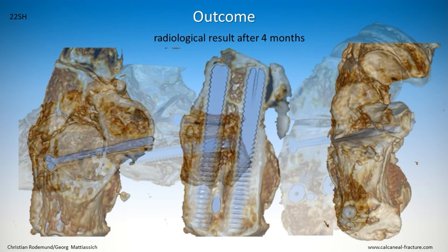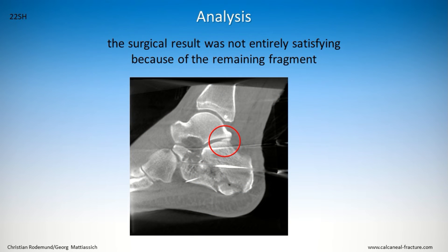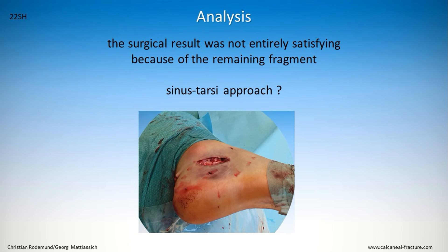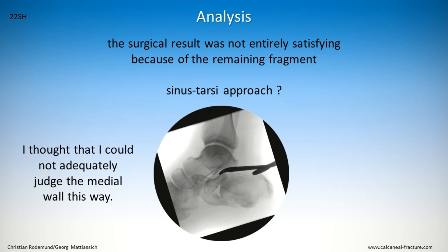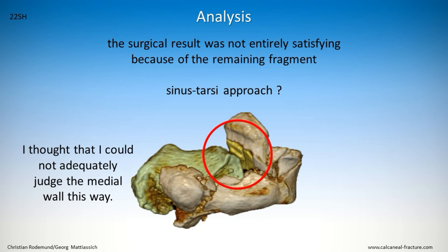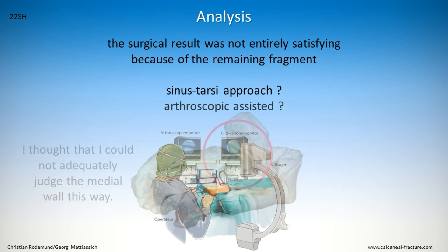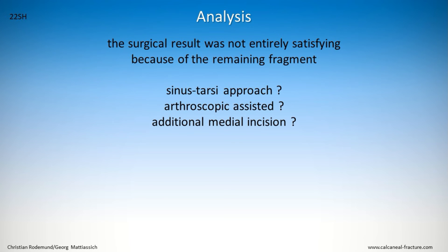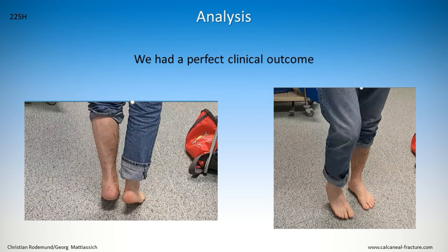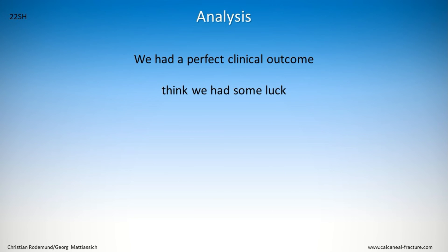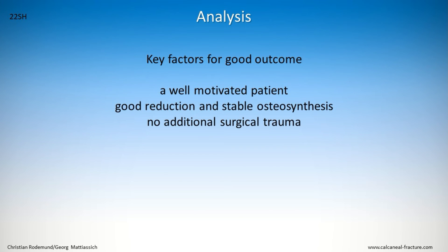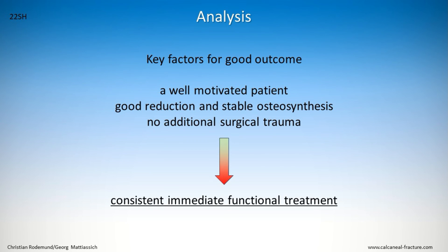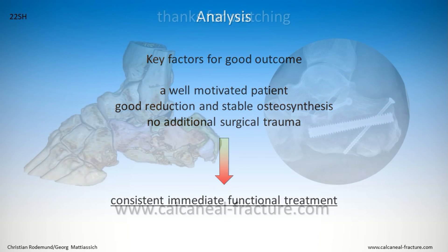When analyzing the case, some points need to be discussed. The surgical result was not entirely satisfying because of the remaining fragment. I did not use a sinus tarsi approach because I was uncertain whether I could adequately judge and reduce the medial wall in this way. But in hindsight it might have been useful. We can also consider arthroscopic support or an additional open approach — in these cases the entire procedure has to be planned differently. To summarize: we were of course a little lucky, but we also achieved the key factors for a good result: a well-motivated patient, a good reduction with stable osteosynthesis, no additional surgical trauma, and as a benefit, consequent immediate functional treatment.